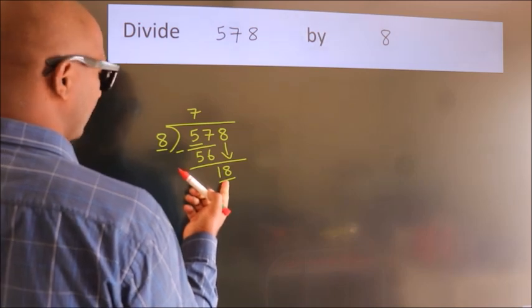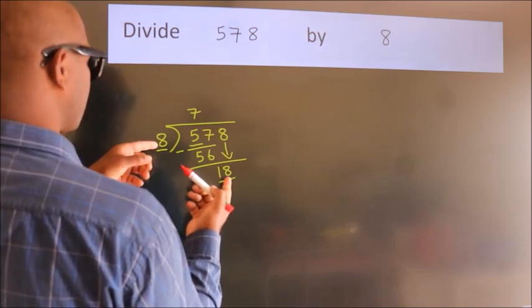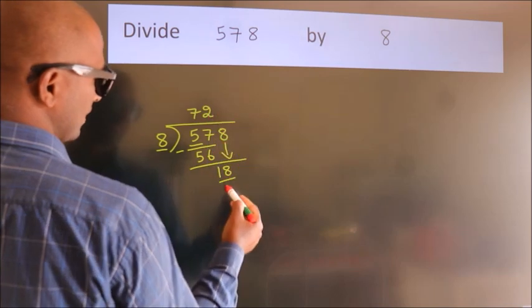A number close to 18 in 8 table is 8 2's 16.